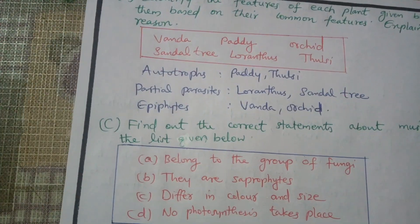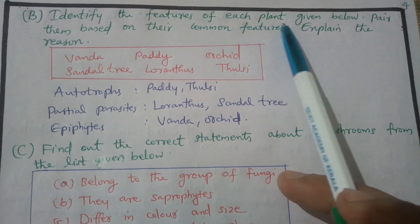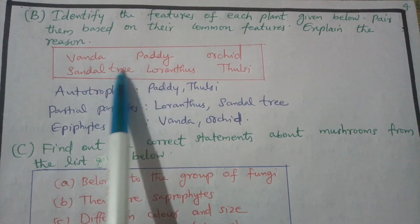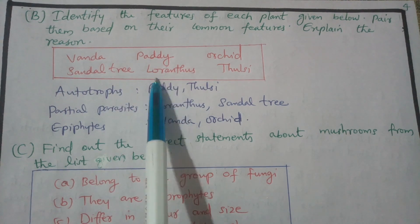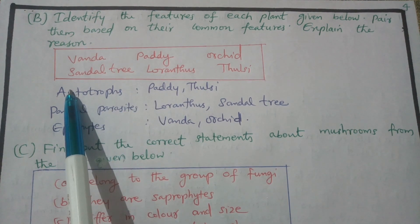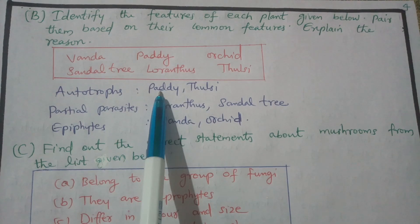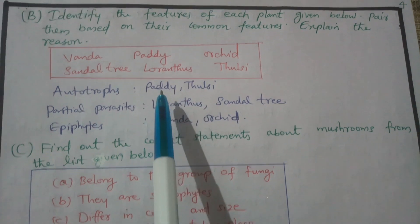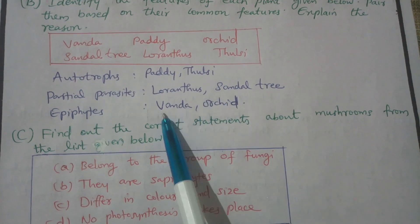Identify the features of each plant and pair them based on their common features. Sandal tree is a partial parasite. Vanda orchid is an epiphyte.